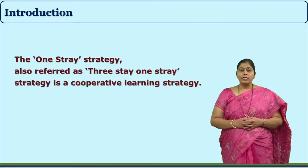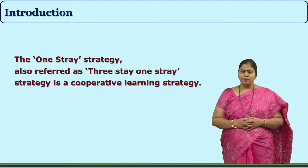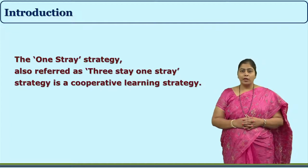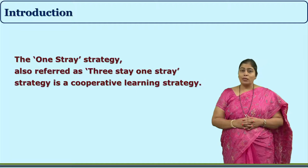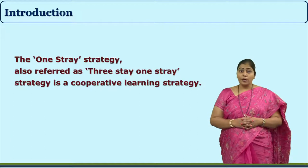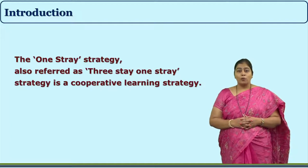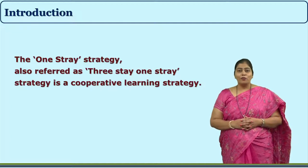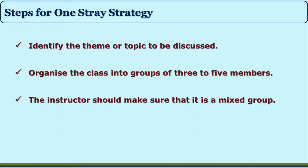The One Stray Strategy of cooperative learning is also called the Three Stray Strategy or the Two Stray Strategy of cooperative learning. It is a very effective strategy that can be implemented at the elementary level of learning. Let us look at the steps of this strategy.